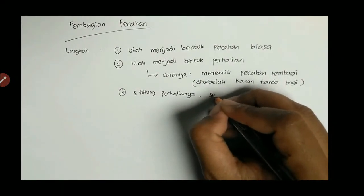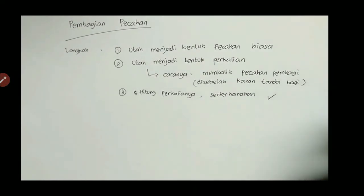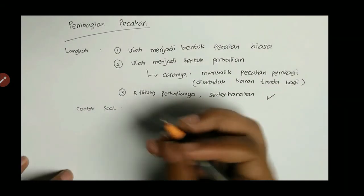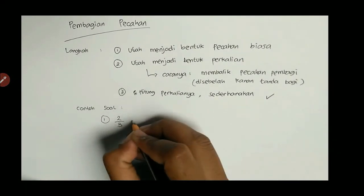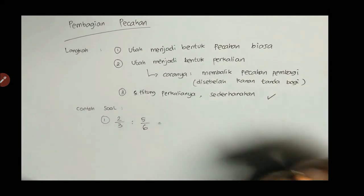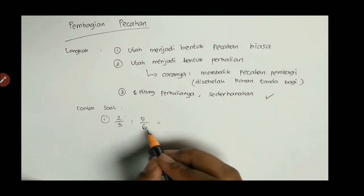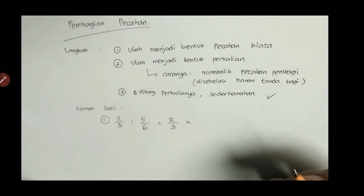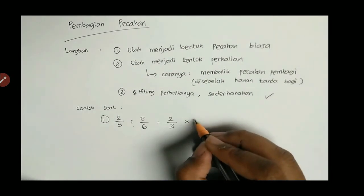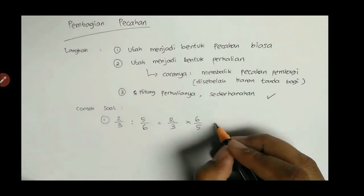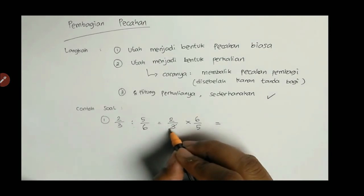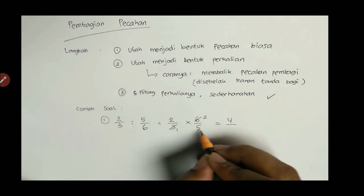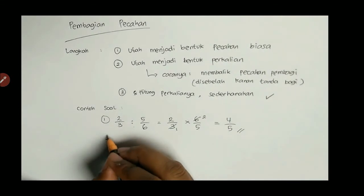Lebih mudah jika memperhatikan contoh berikut. Contoh soal nomor 1: 2/3 dibagi 5/6. Sudah dalam bentuk pecahan biasa. Diubah menjadi perkalian: 2/3 tetap, pecahan pembagi 5/6 dibalik menjadi 6/5. Baru dihitung: 6 dan 3 disederhanakan, bagi 3 hasilnya 2 dan 1. Jadi: 2 × 2 = 4, per 1 × 5 = 5. Hasilnya 4/5.